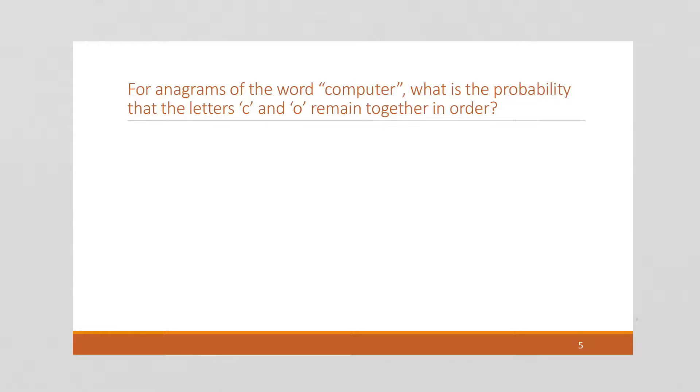So here's kind of a fun probability problem. We know how many anagrams there are of the word computer. What is the probability of a random value being chosen from that anagram pile, the set of anagrams, to have the letters C and O remain together in order? So I recommend you pause this for a minute and try to work it out. It's kind of a fun puzzle. So if you've given it a try, the answer is actually probably easier than what you tried. This seems like it's going to be a really hard problem, but it's really not.